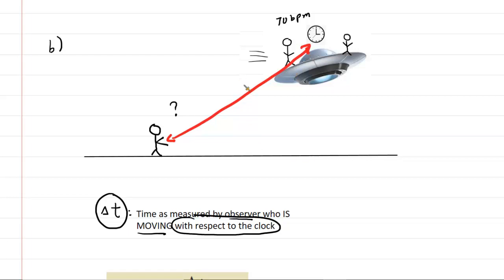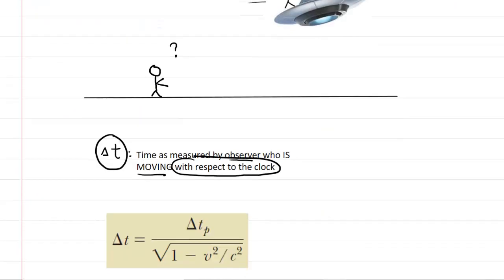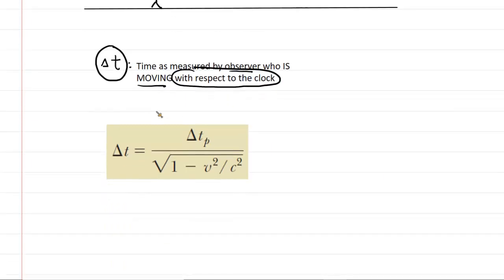And the answer is certainly yes. As the spacecraft moves farther and farther to the right in this picture, the clock is getting farther and farther away from the observer back on Earth. And therefore, the observer on Earth is moving relative to that clock. So we have to calculate that new time interval. And we're going to do so by using the time dilation equation right here.